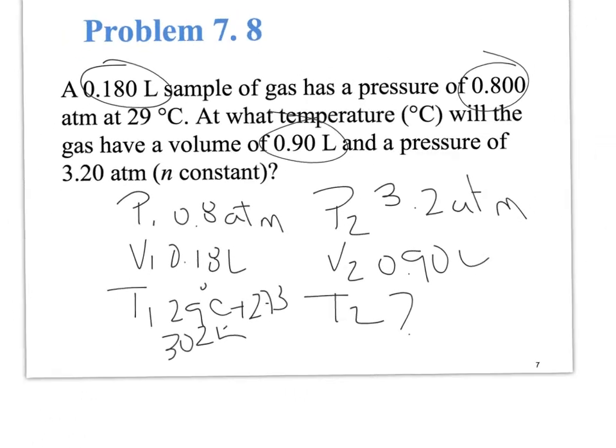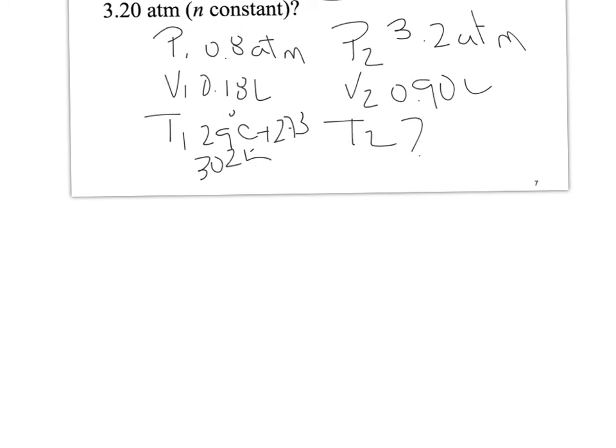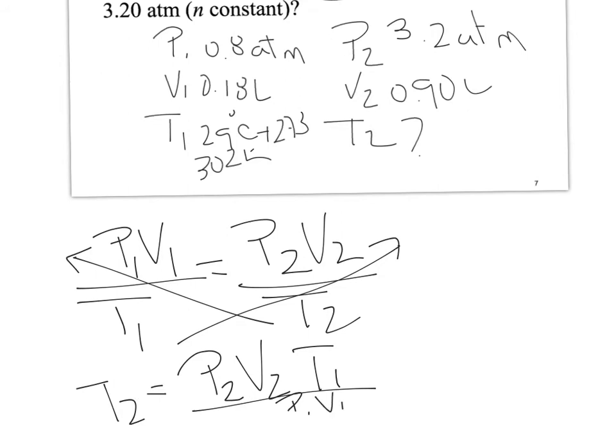So, we're going to work with the combined gas law. So, P1 V1 over T1 equals P2 V2 over T2, and we're going to solve for T2. Here we do cross multiplication, and we have T2 equals P2 V2 T1 over P1 V1.